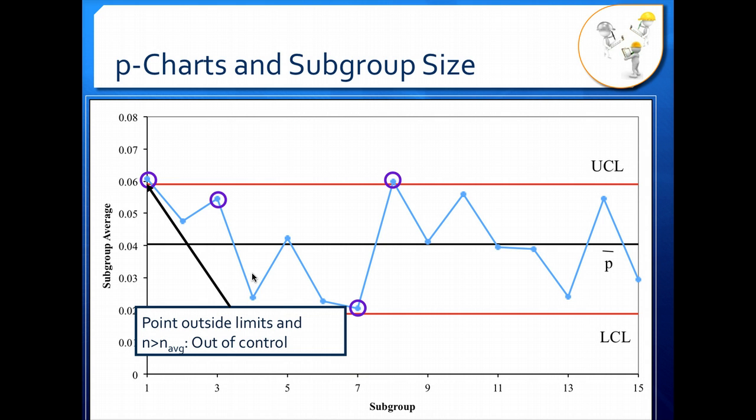If we have a point outside our limits and our subgroup size is larger than our average subgroup size, we know that that point is out of control.